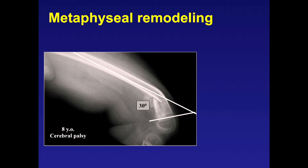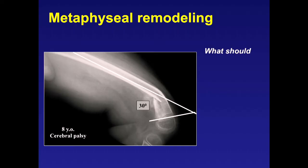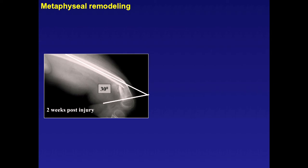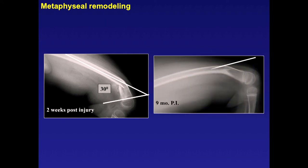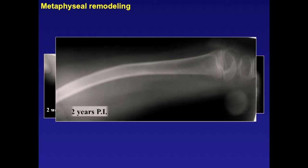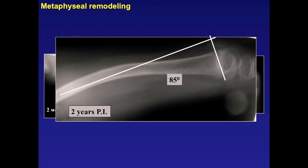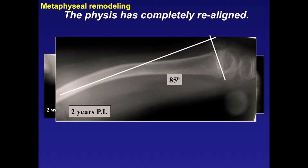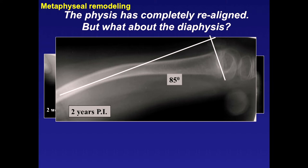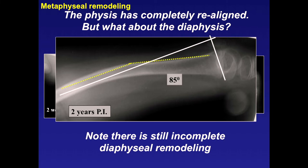Here's a non-ambulatory 10-year-old girl with cerebral palsy—we decided not to intervene. She had 30 degrees of angulation; the diaphyseal angle should be perpendicular, less than 10 degrees of angulation. At two weeks, then nine months, it was getting better. At two years, it's back to normal—the physis completely realigned itself. But the diaphysis is not fully remodeled because it has less potential to remodel—75% in the physis, only 25% there. Diaphyseal remodeling is slower.